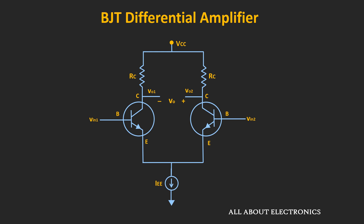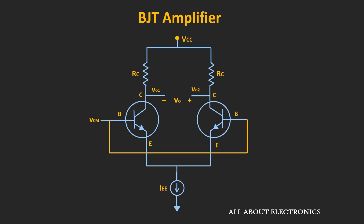Now let's understand qualitatively how the differential amplifier responds to the common mode as well as the differential inputs. In the next video, we will go through the large and small signal analysis. First, let's see the response to the common mode signal, which could be some DC voltage or some form of noise common to both input terminals.